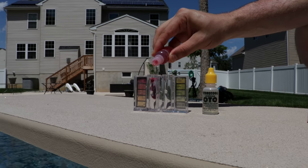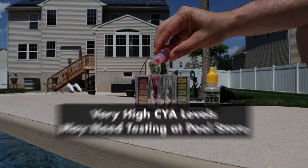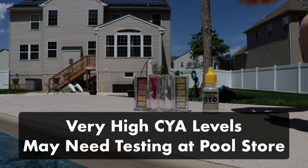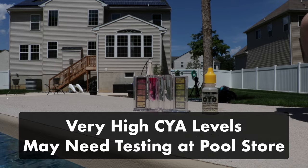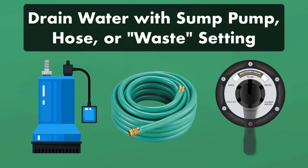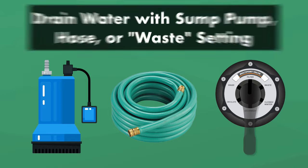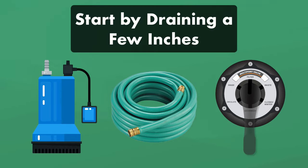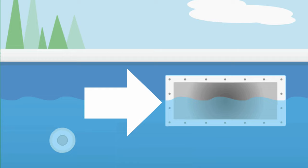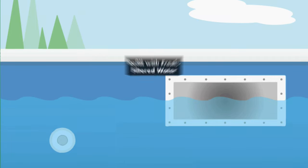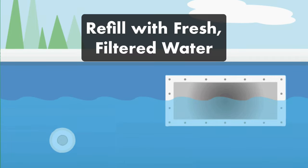Before diluting your pool, test your water. If your CYA levels are extremely high, your reading might be off the chart and you'll need to take a water sample to your local pool store. Begin partially draining your pool using a submersible pump, a hose siphon, or the waste setting on your filtration system. Depending on how high your CYA levels are, you may want to remove a few inches of water. As you drain your pool, make sure that your water level never reaches below the skimmer, otherwise your pump may run dry. Once you've drained out some of the water, refill your swimming pool with fresh water, ideally with a hose filter, and then retest your pool water.